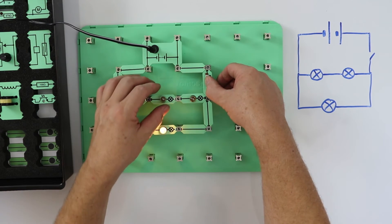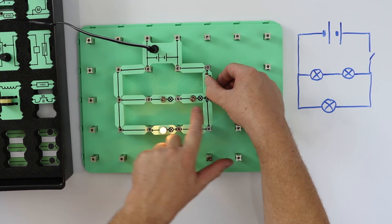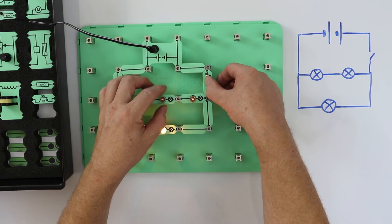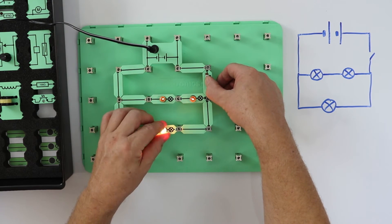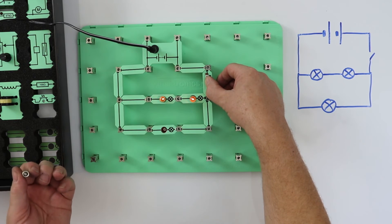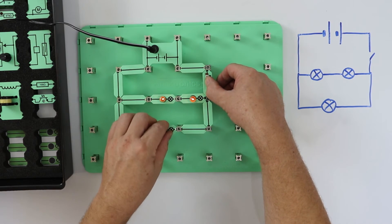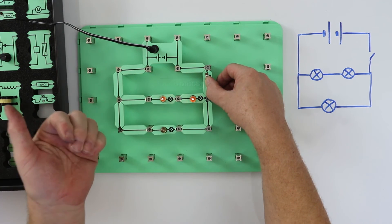If we unscrew this bulb, then the electricity cannot flow through this route. If I unplug this one, it can't flow through the bottom route. If both are unscrewed, then the circuit is destroyed.